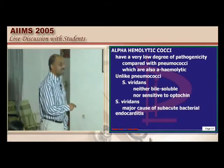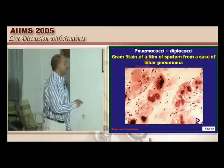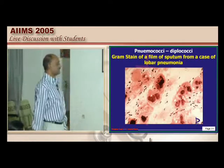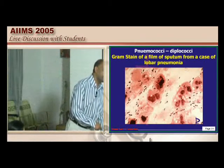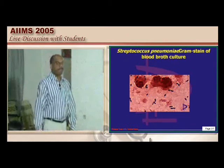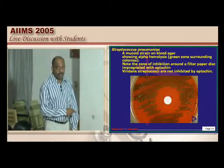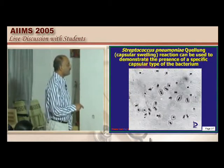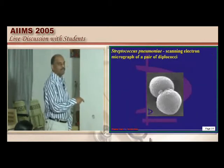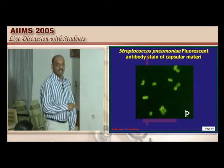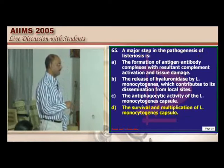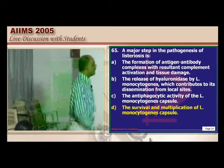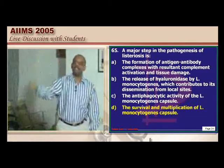Unlike pneumococci, Streptococcus viridans is neither bile-soluble nor sensitive to optochin. Streptococcus pneumoniae is bile-soluble and optochin-sensitive. Remember Streptococcus viridans as the cause of subacute bacterial endocarditis. Pneumococci are gram-positive diplococci; around an optochin-impregnated disc there will be no growth. There is capsular swelling called the Quellung reaction with Streptococcus pneumoniae. Buzzwords: bile solubility and optochin sensitivity.